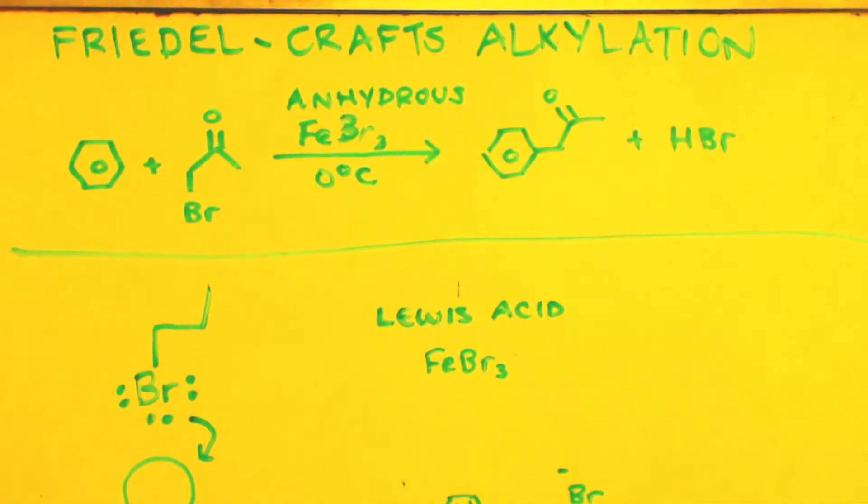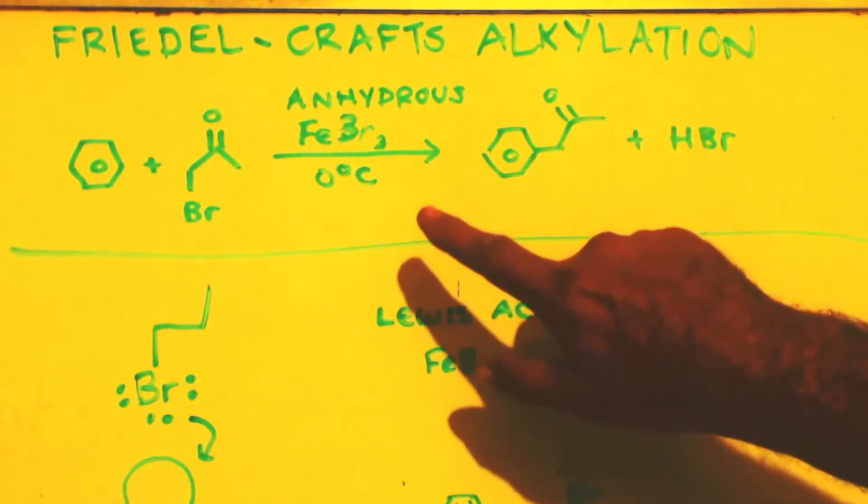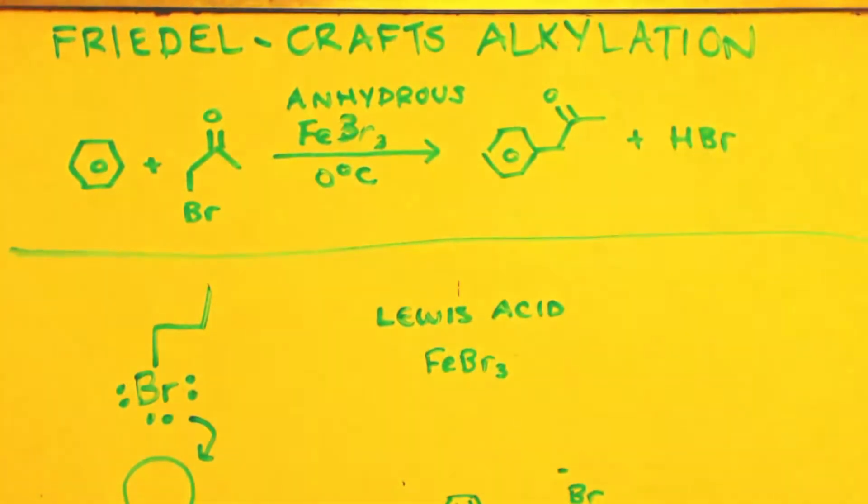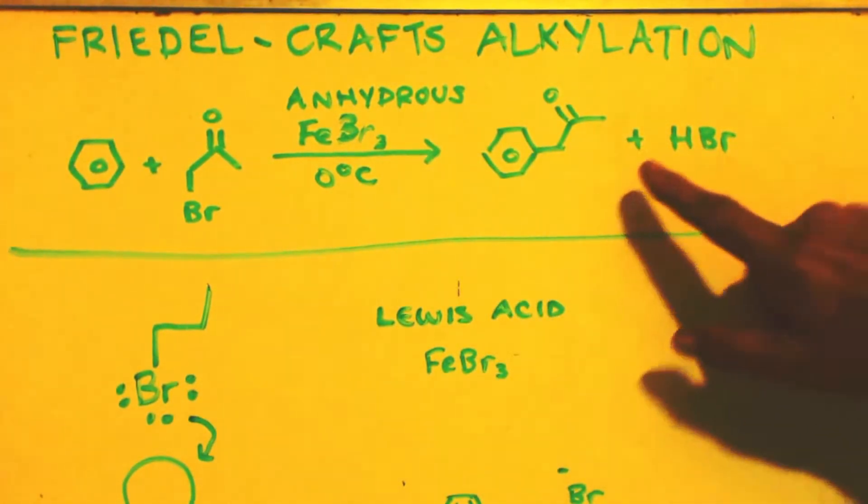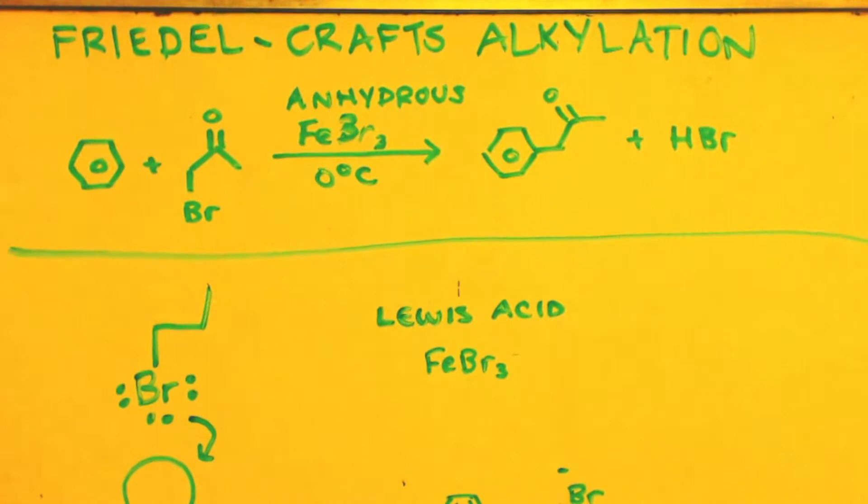All right, this is John White, Breaking Mad, talking about Friedel-Crafts alkylation, mainly making P2P. Here's the formula for it. All you need is benzene, bromoacetone, a tiny bit of anhydrous iron bromide, and do it at zero degrees C, and you'll make P2P and HBr. Let's go over the mechanism.